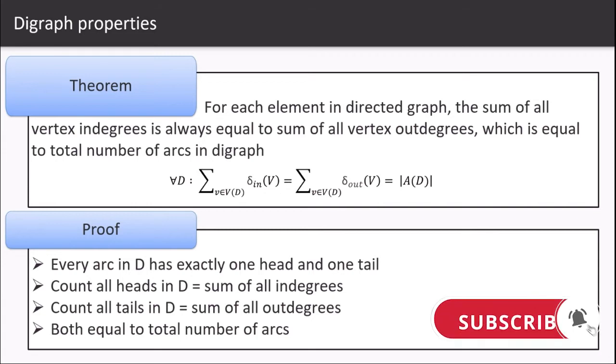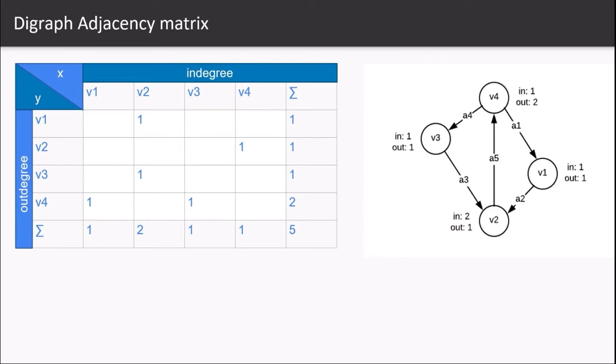Let us get ourselves more clear by looking at the digraph adjacency matrices. So here the x-axis represents the in-degrees and the y-axis represents the out-degrees. V2 has an edge coming from v3 and v1 so we will put two ones in the first column under v2. Similarly it goes for all of the vertices here.